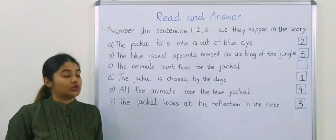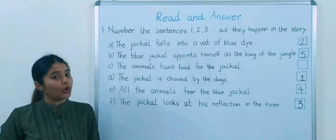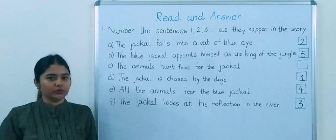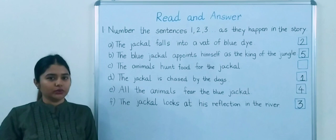So after he declared that he was their king, he allotted, or you can say assigned, duties to all the animals of the jungle. So everyone started to do their duty. Main duty was to serve the jackal himself. So the animals hunt food for the jackal is the last, sixth point.